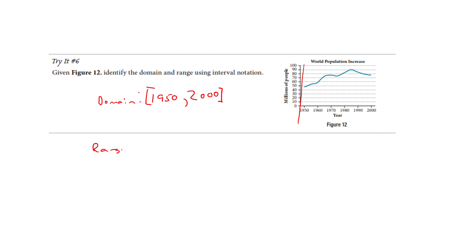Now my range. I'm going to start my ruler going up the y-axis. There would be nothing until I get to what appears to be about 48, and I'm including it. My ruler keeps going, keeps hitting graph somewhere, until I get to just right above 90 — we'll call that 92. It's filled in, and we'll give that a bracket. So the range is approximately 48 to 92.